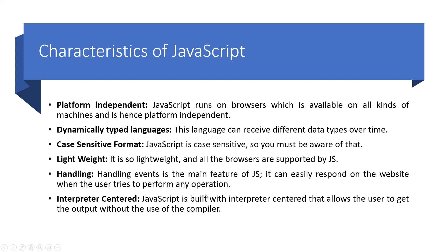The last characteristic is interpreter-centered. JavaScript is built with an interpreter-centered approach that allows the user to get output without the use of a compiler. Previously it was only an interpreted language, which gave very slow speed. Then the JIT compiler was introduced, so now we can say that JavaScript is both an interpreted and compiled language.